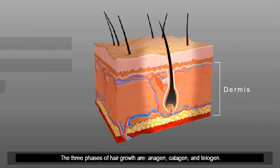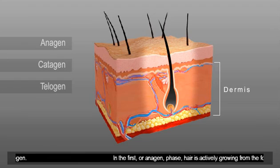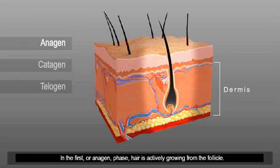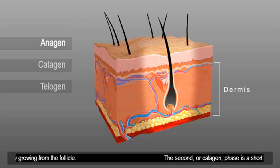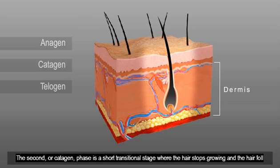The three stages of hair growth are anagen, catagen, and telogen. In the first, or anagen phase, hair is actively growing from the follicle.